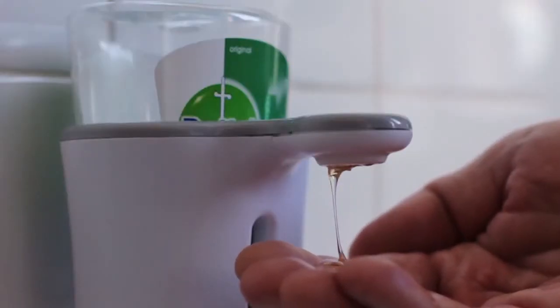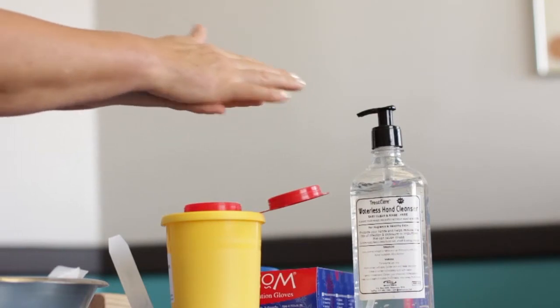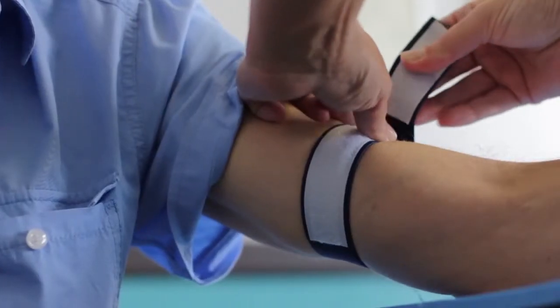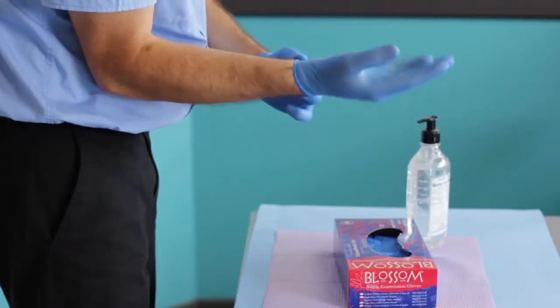Prepare your hands hygienically by washing with soap and water or by using an alcohol hand rub. Apply a tourniquet and select a suitable vein. Put on clean gloves.